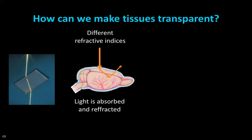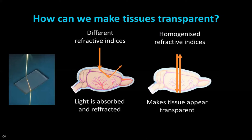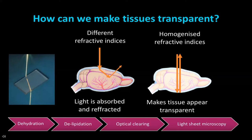The most basic premise for optical clearing is a homogenization of refractive indices, which makes the tissues appear more transparent. The basic steps we use are dehydration, delipidation, and optical clearing—substitution of refractive indices using another solution—and then we can use it for light sheet microscopy.